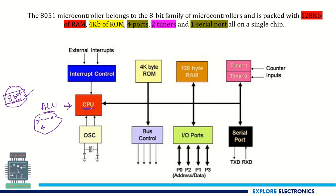For that processing, we require a clock signal. That clock signal is provided by a crystal oscillator. This oscillator provides a clock signal of 12 MHz. This is the oscillator which is present inside the 8051 IC.